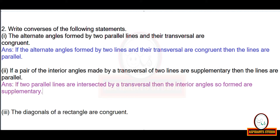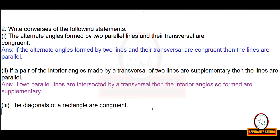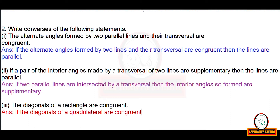For the next statement — 'if two parallel lines are intersected by a transversal then the interior angles so formed are supplementary' — write the converse. Also, 'the diagonals of a rectangle are congruent': the converse is 'if the diagonals of a quadrilateral are congruent, then the quadrilateral is a rectangle.'